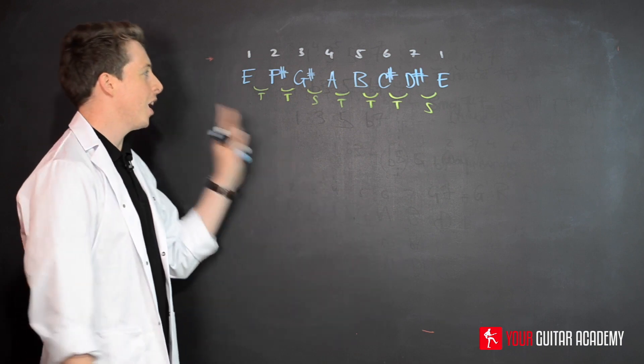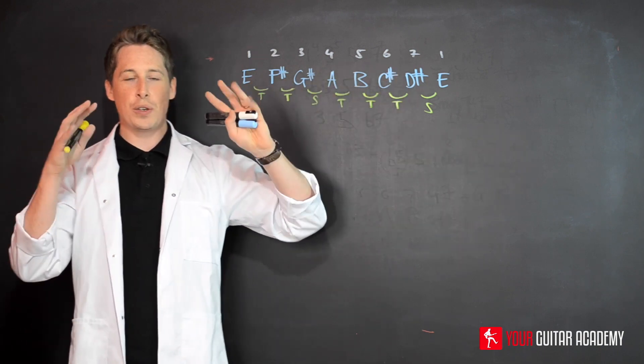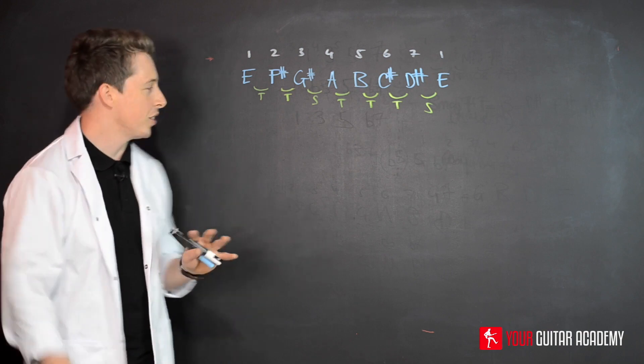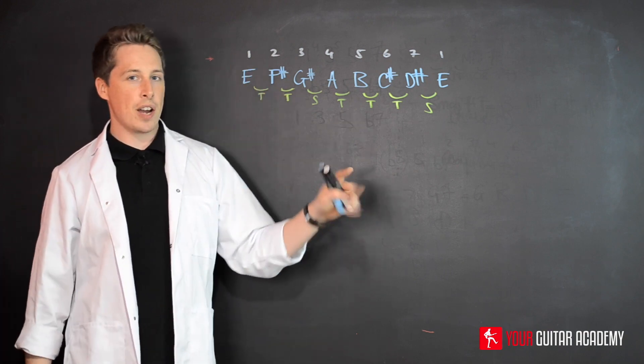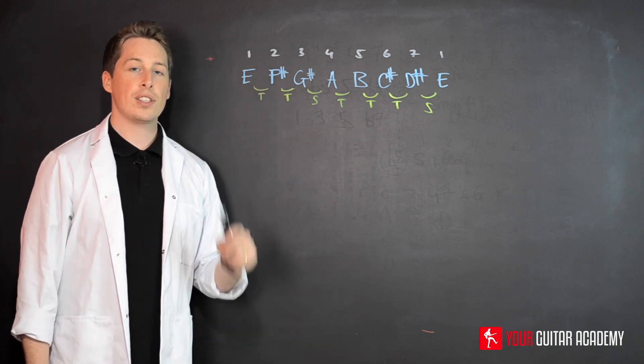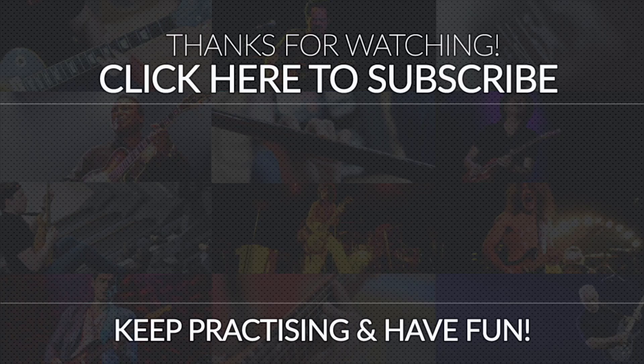We've got C with no sharps, we got G with one sharp, D with two sharps, A with three sharps, and E with four sharps. Hopefully you're starting to just remember some of this stuff now. With that ready to go, in the next video we're going to start looking at these diminished chords.